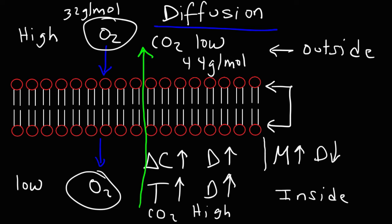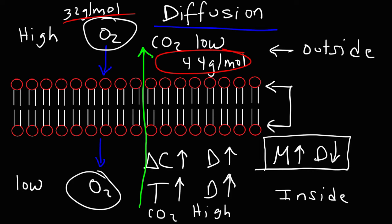As the molar mass increases, the rate of diffusion decreases. This is because heavy molecules tend to move more slowly, whereas lighter molecules tend to move at a higher speed. Because carbon dioxide is heavier than O2, it's going to diffuse across the membrane at a slower rate. Oxygen, being the lighter gas, will move at higher speeds and therefore diffuse across the membrane at a higher rate. Heavy gas molecules with high molar masses have lower speeds, and because their speed is lower, the rate at which they travel across the membrane will be lower as well. The speed of a particle and the rate of diffusion are directly related.